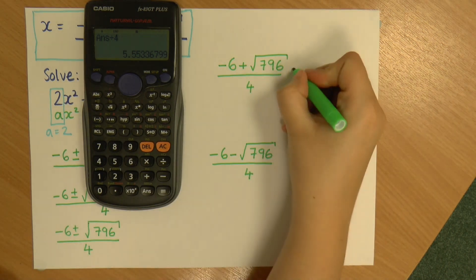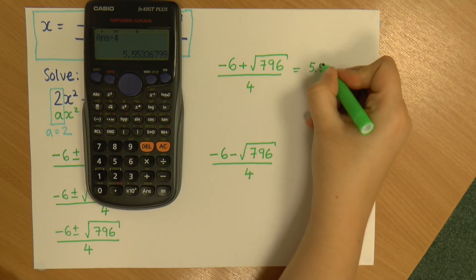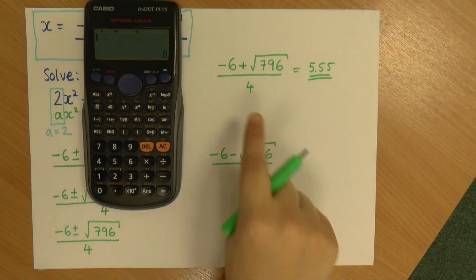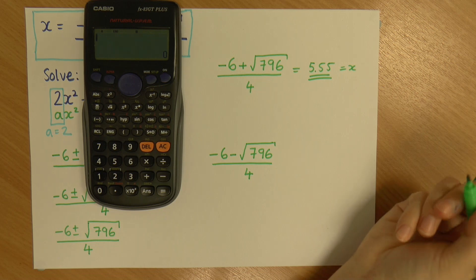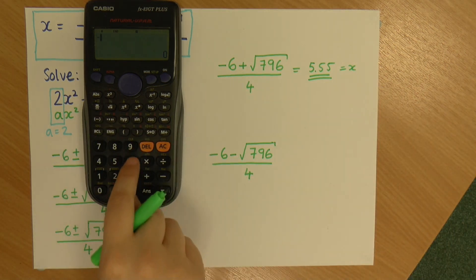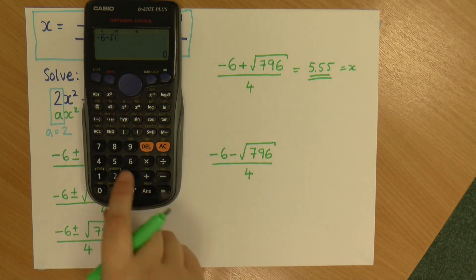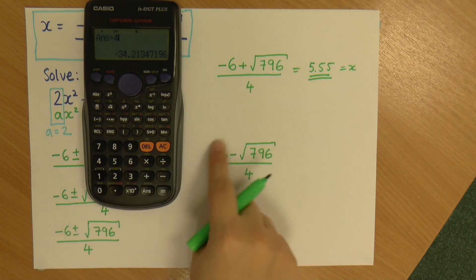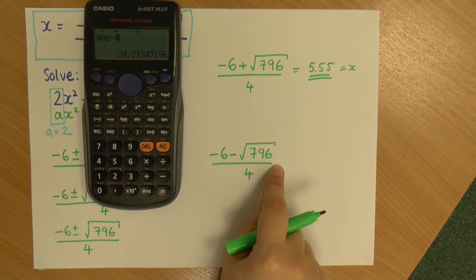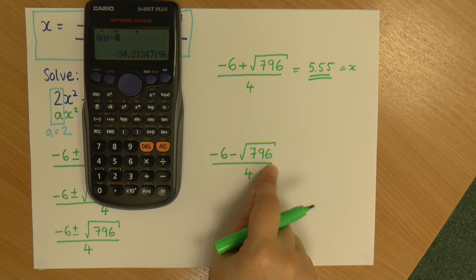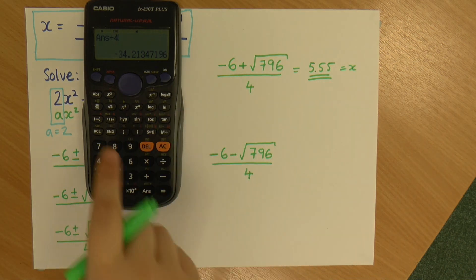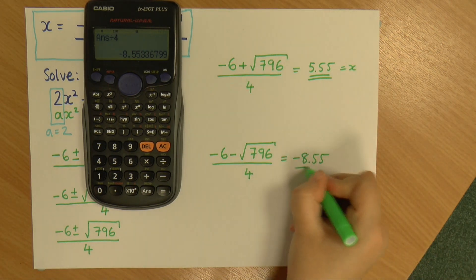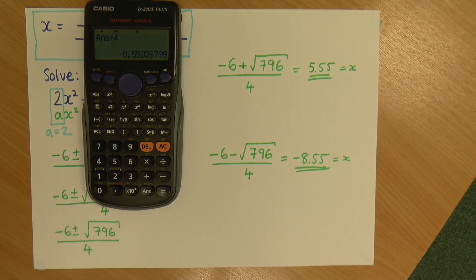And that gives me 5.55, I've rounded it. So that's the first one, and that is one of my x's. And my other, so I've got minus 6 minus the square root of 796, which is that divided by 4. And make sure you're always doing everything on the top before dividing, because that division is everything. So you need to be careful where that line is, where it goes up to. But anyway, divide by 4, and that gives me minus 8.55. That's my other value of x.